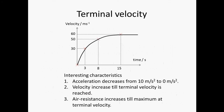Some important characteristics of the terminal velocity graph: first, as the object enters terminal velocity, the acceleration decreases from 10 to zero m/s². Initially the acceleration — the gradient of the graph — is 10. But as it travels further down, the tangent gets gentler and gentler, eventually becoming horizontal, so the acceleration becomes zero.